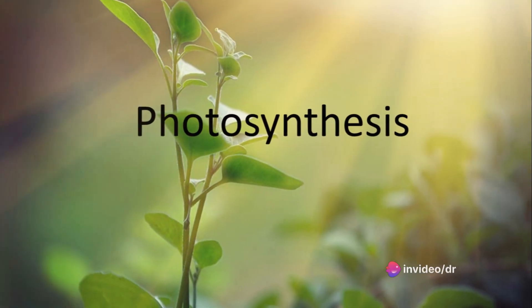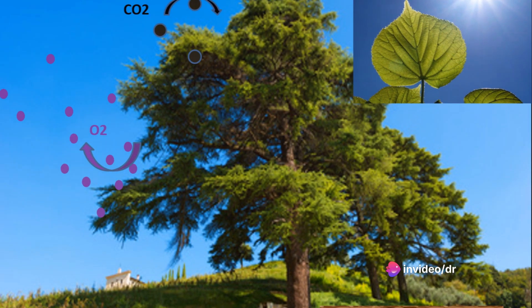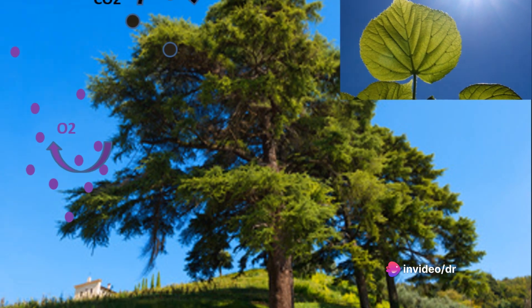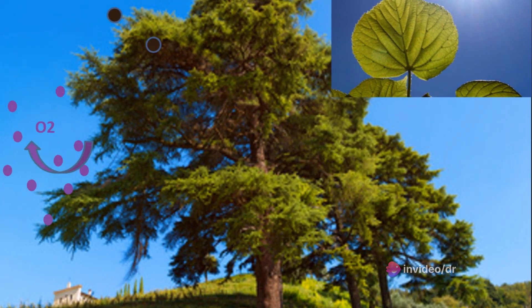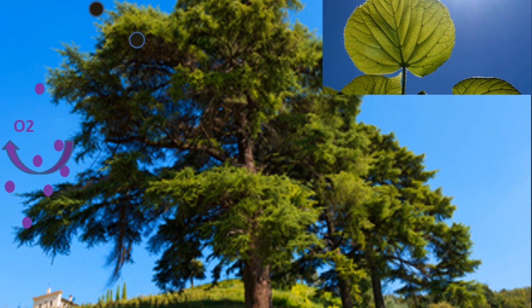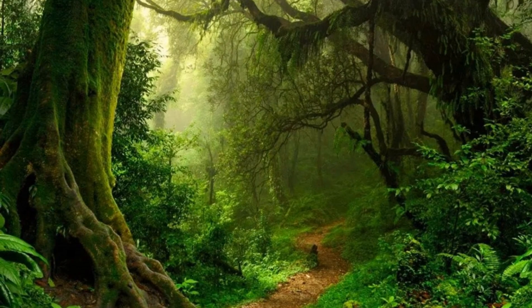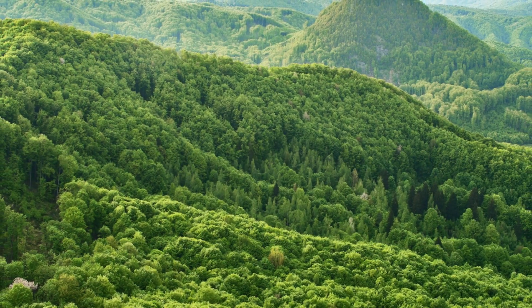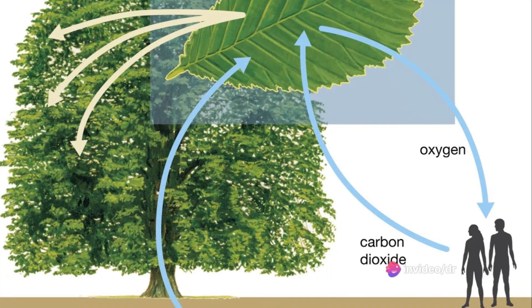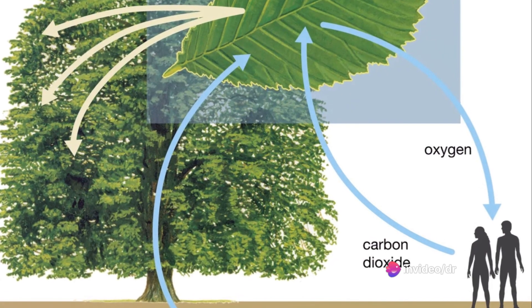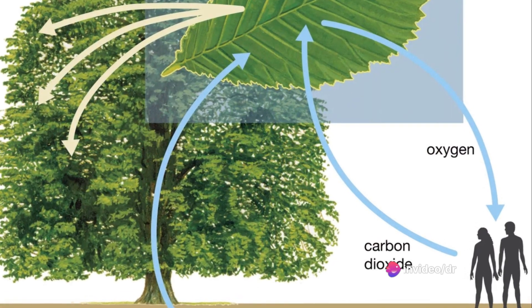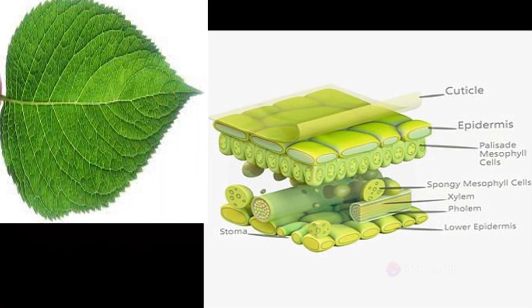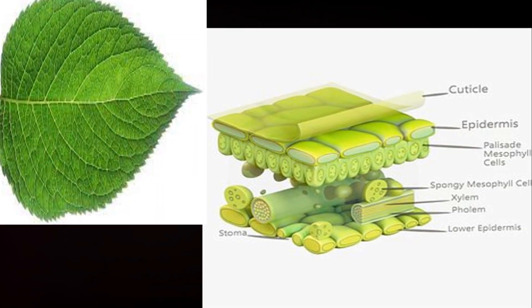Photosynthesis is the only process where solar energy is harvested, water molecules are oxidized to form oxygen, and carbon dioxide is reduced to form carbohydrates. Photosynthesis is a life-supporting process on planet Earth, as it releases oxygen into the atmosphere and absorbs carbon dioxide to build organic molecules.